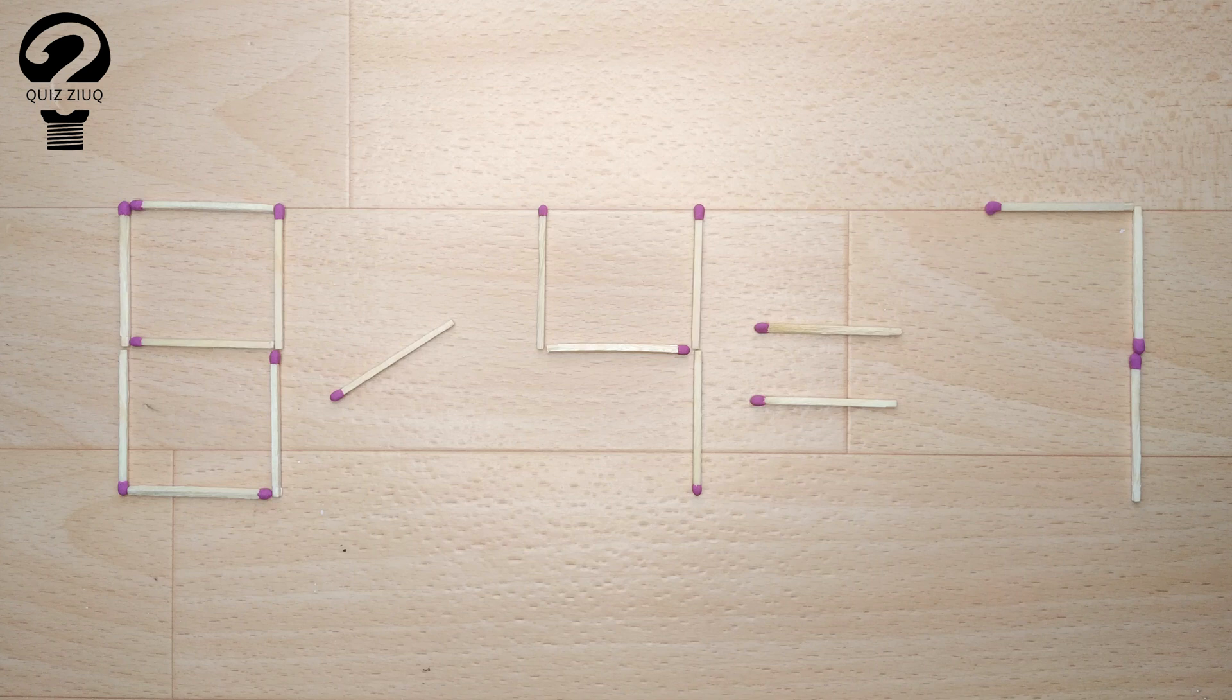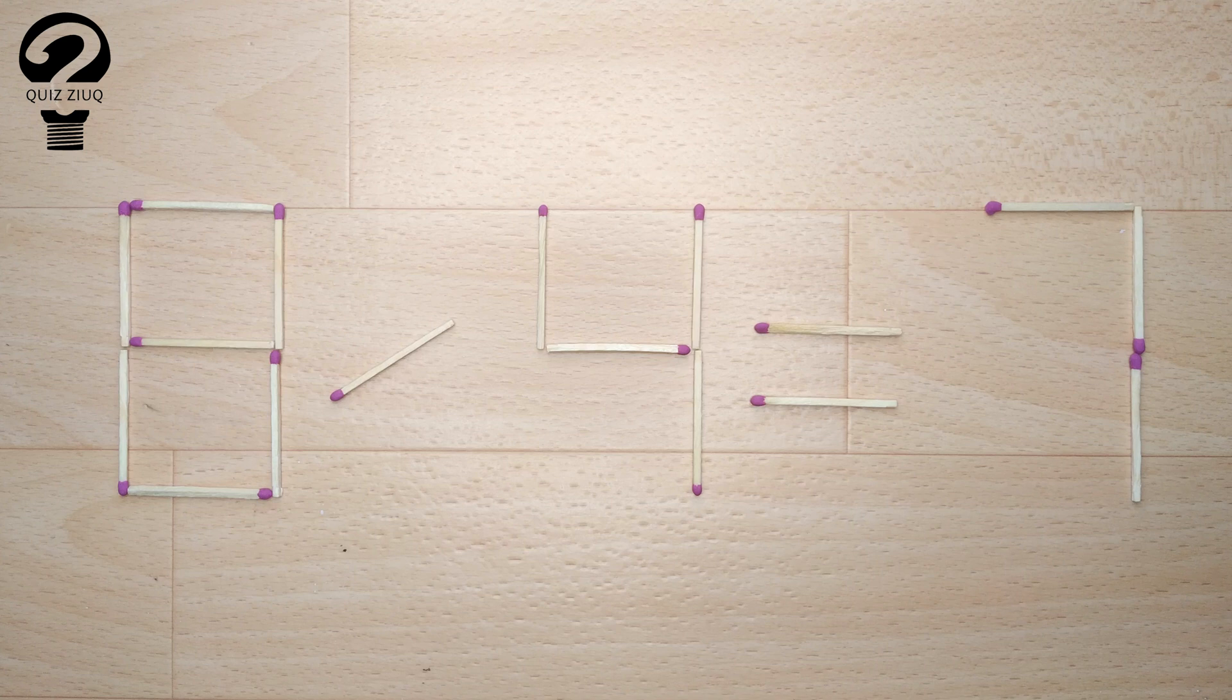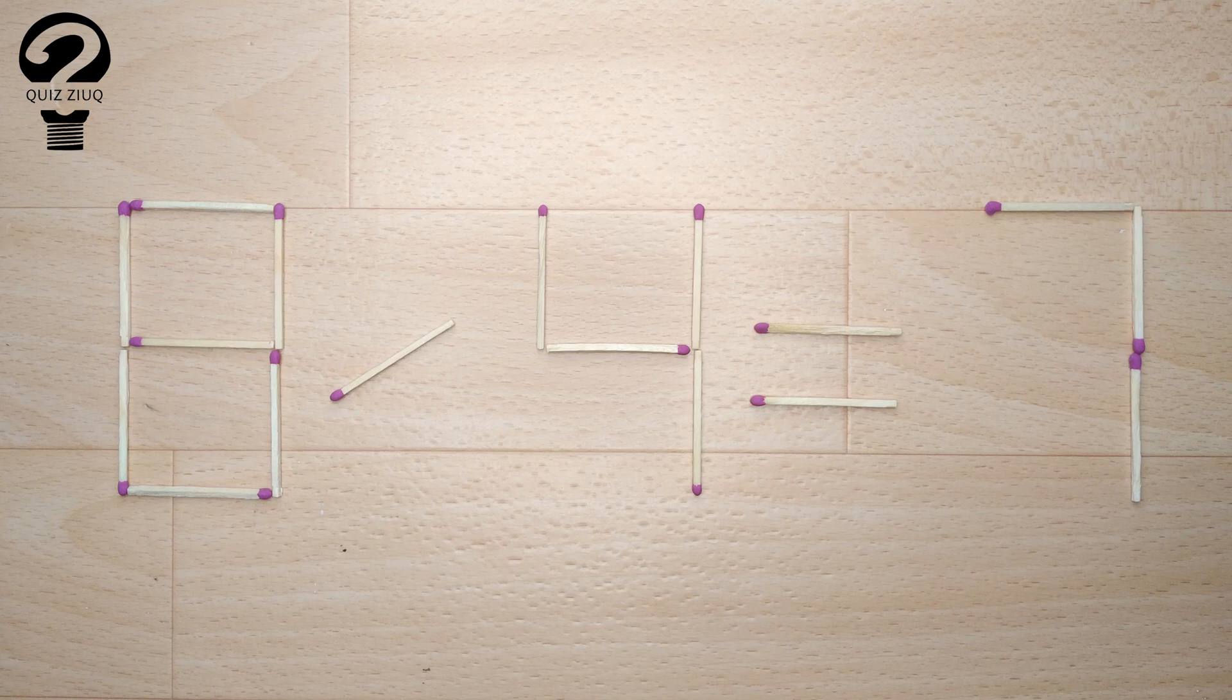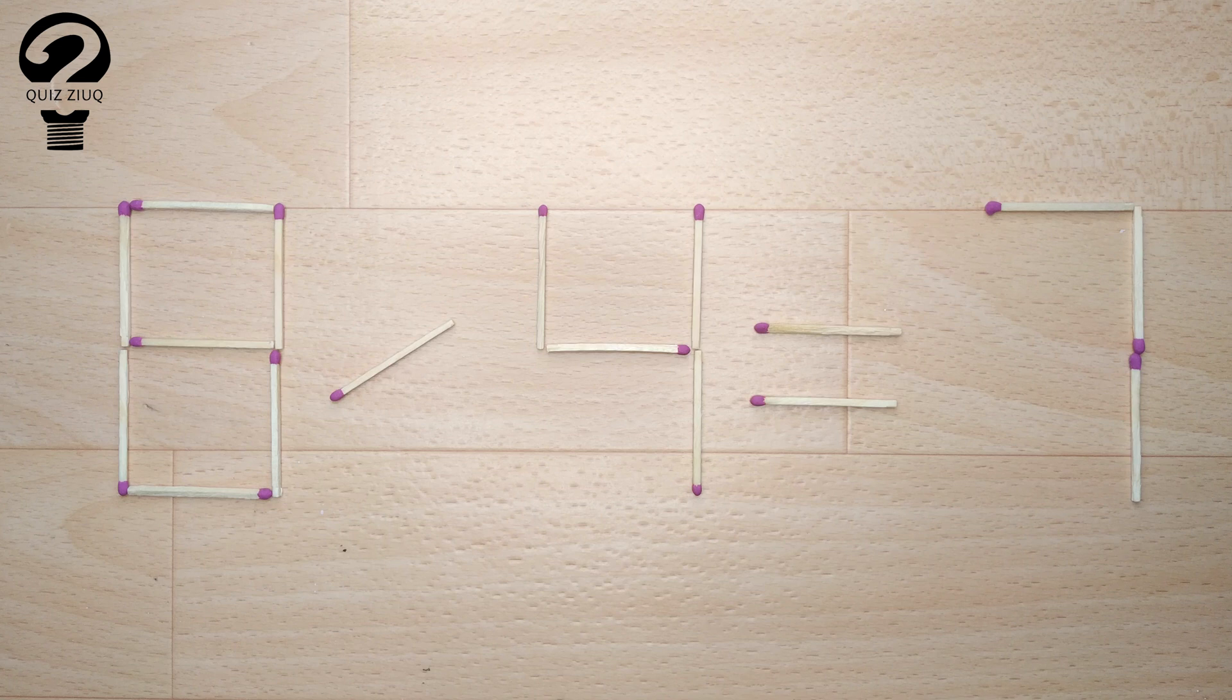We have this equation, 8 divided by 4 equals 7. Our equation is incorrect and we need to move two matches to make our equation correct.